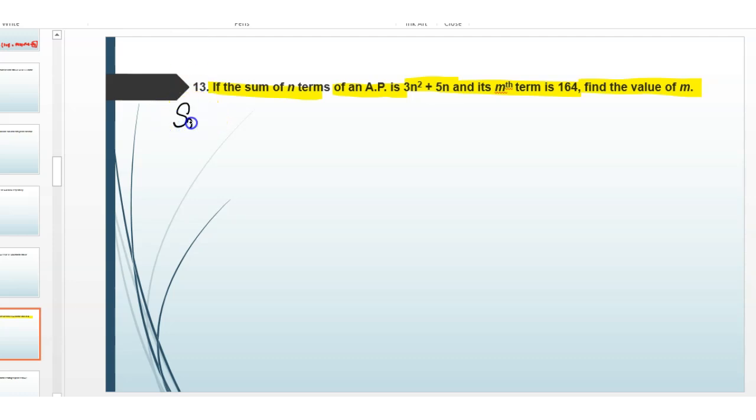First of all, we write here sum of n terms is equal to 3n square plus 5n, and the mth term is equal to 164. Here put n is equal to 1, then we will get S1 is equal to 3 multiplied with 1 square plus 5 multiplied with 1, so it will be 8.